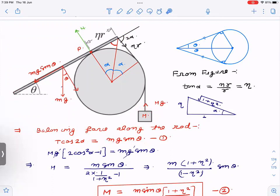So T is equal to Mg because this is in equilibrium, g cancels, and you get M value which is m sin θ divided by 2 times (1 + η²) cos α.